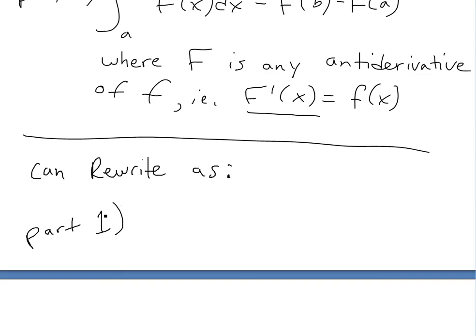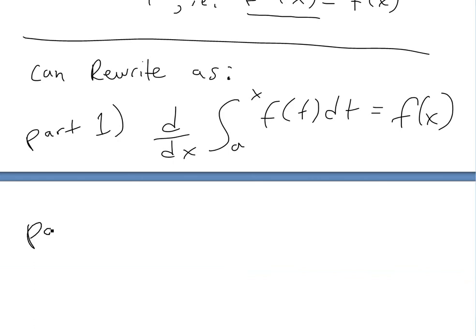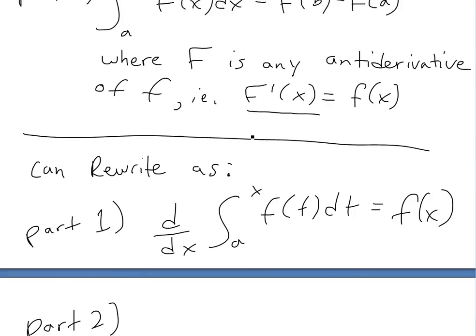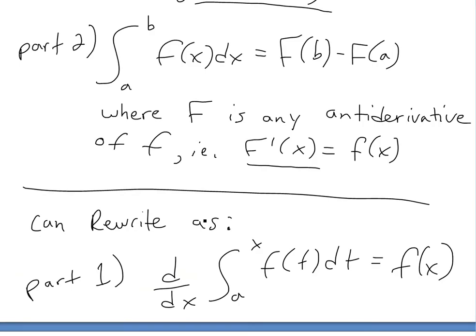Also, you can also rewrite these two. The first one you can just write, part one of the theorem, we can just write d over dx of integral a to x, f of t dt just equals to f of x here. Or the derivative of the integral, which is g of x, is just equal to f(x). So you could write part one like that, and you could also write part two such that you'll just plug this derivative of the anti-derivative inside.